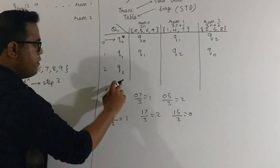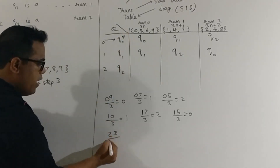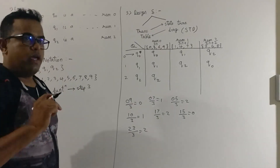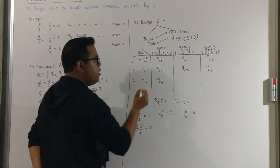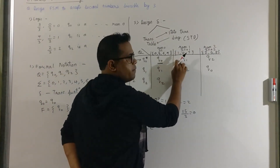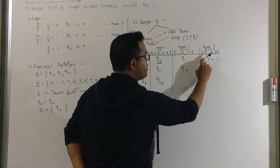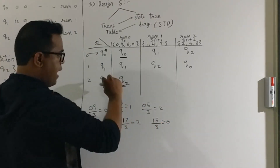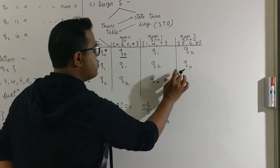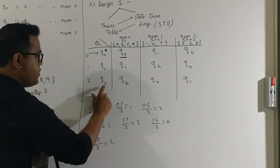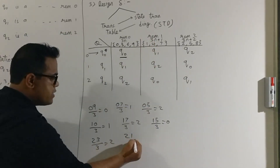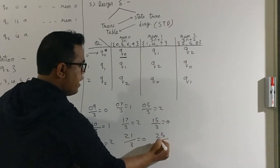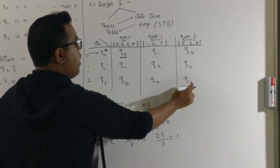Now the last row, Q2. You have 2 with you. Pick any remainder-0 number — say 3. 23 divided by 3: remainder is 2, so go to Q2. For the divisibility problem, you can apply a shortcut: if you get Q0, increment the state number — Q0 becomes Q1, Q1 becomes Q2, Q2 becomes Q0. Using that shortcut, after Q2 we get Q0, and after Q0 we get Q1. Verifying: from Q2 pick 1, giving 21 divided by 3 — remainder 0, which is Q0. From Q2 pick 5, giving 25 divided by 3 — remainder 1, which is Q1.